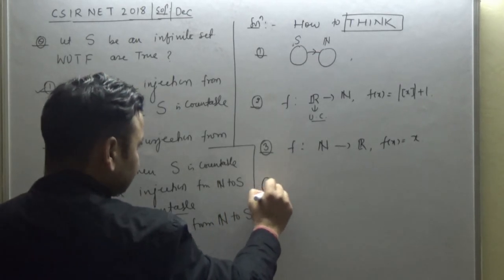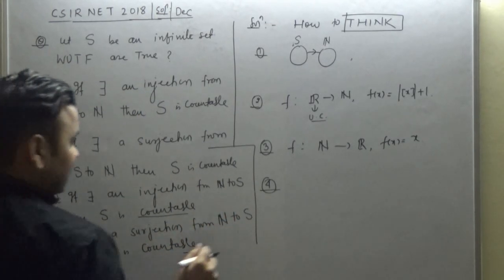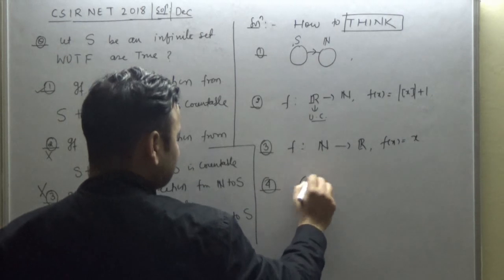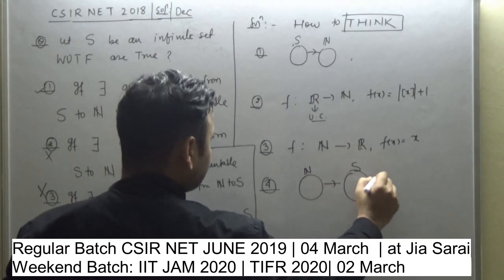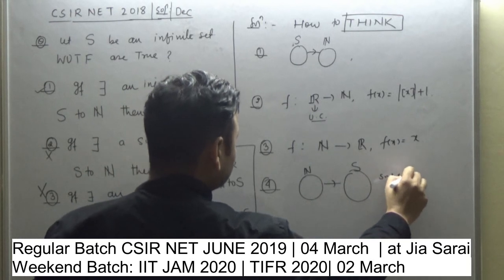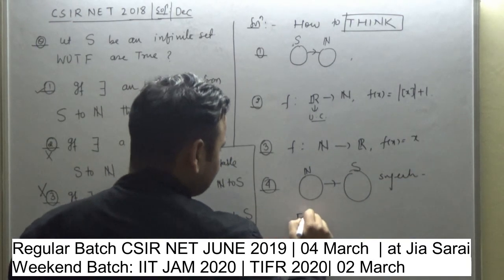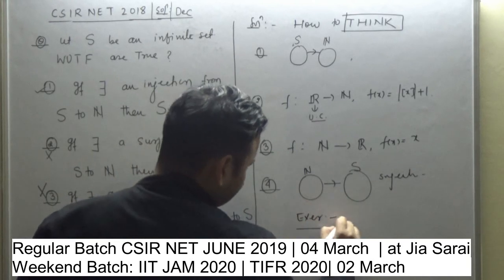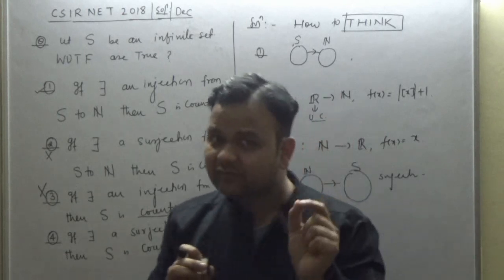Fourth: if there is a surjection from N to S, then S is countable. What do you say about S being countable if you're getting a surjection from N to S? This I like to leave as an exercise.